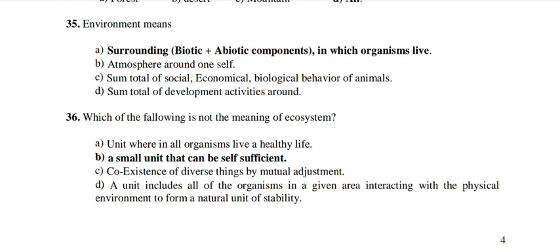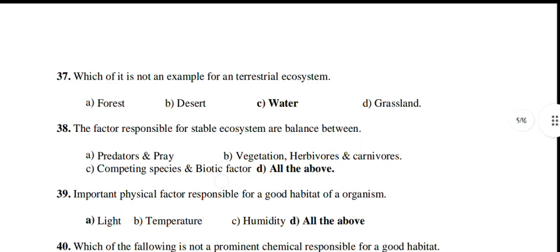Which of the following is NOT the meaning of ecosystem? A small unit that can be self-sufficient — that is the answer B. Which of the following is NOT an example of a terrestrial ecosystem? Water. Water is not a terrestrial ecosystem.